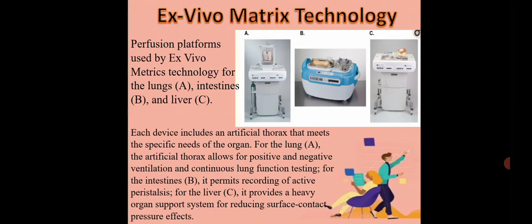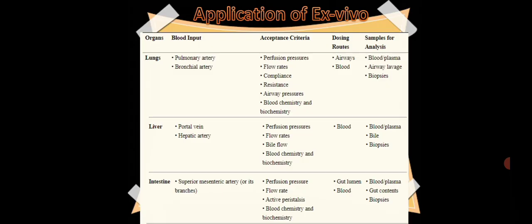Here are the ABC. As you can see, there are three machines. The first one is for the lungs. The second one is for the intestine. And third one is for the liver. These are the ex vivo matrix technology and these kind of technology has been used for the testing. The complete organ is removed and the testing is performed on that perfusion technology, the second name for ex vivo matrix technology. Here are the acceptance criteria: What are the dosing routine? How we can take the sample for the lungs, liver, intestine? Why I am telling you three basic? Because these are being more encountered.